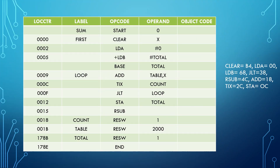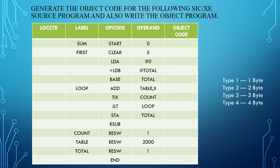Here we have a program and the mnemonic codes for the opcodes. In SIC/XE, we have 4 types of instruction format: Type 1, Type 2, Type 3, and Type 4. Type 1 has 1 byte of size, Type 2 has 2 bytes, Type 3 has 3 bytes, and Type 4 has 4 bytes.